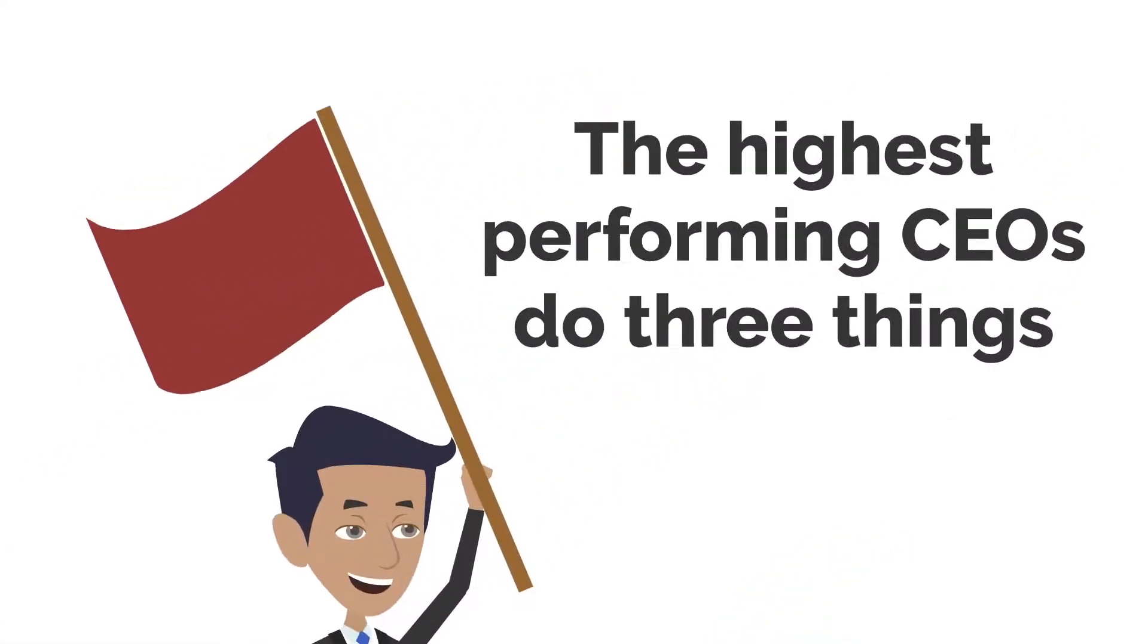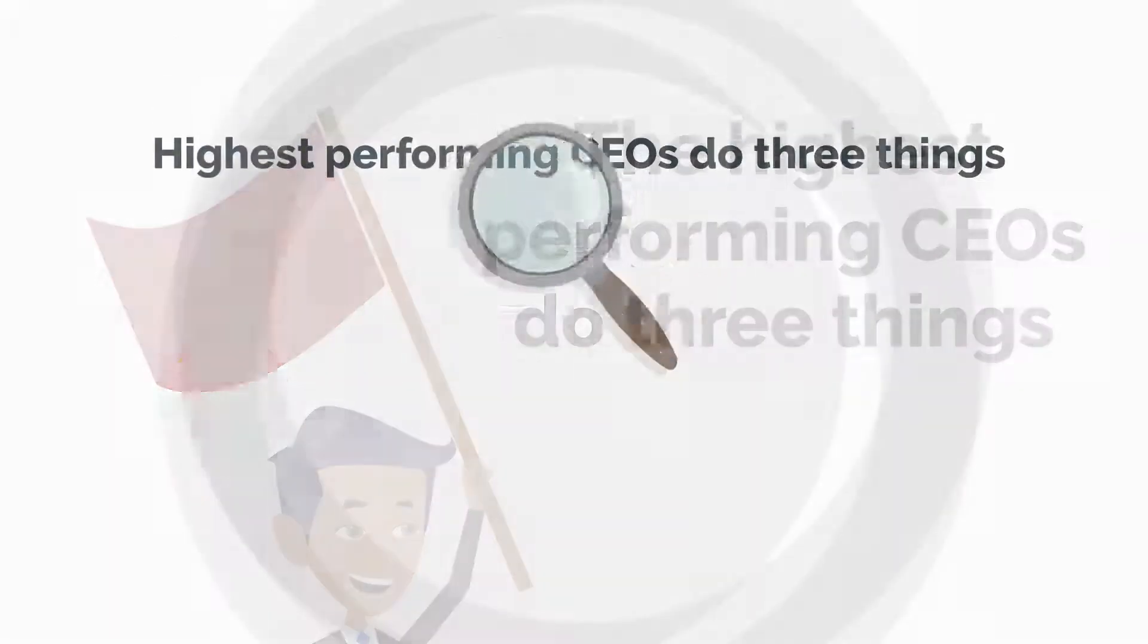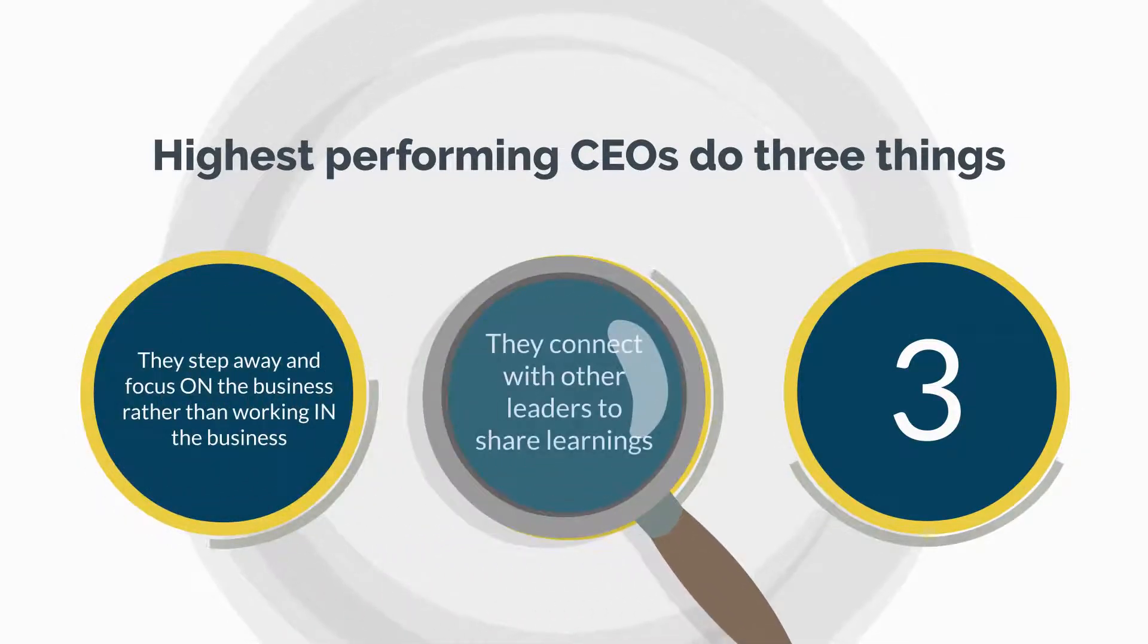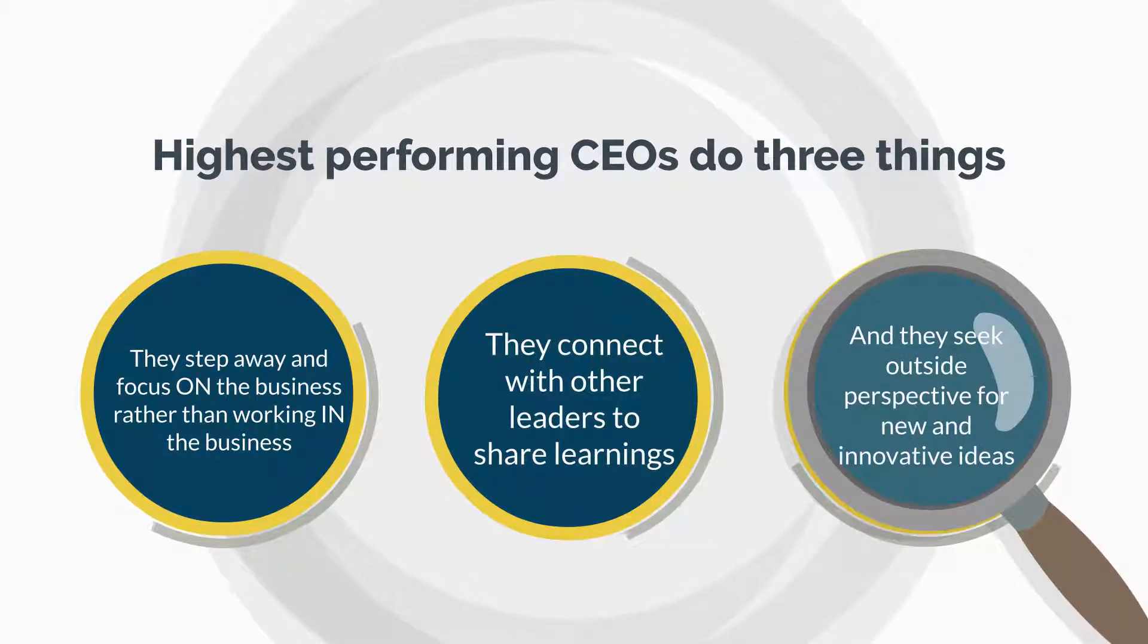The highest performing CEOs do three things. They step away and focus on the business rather than working in the business. They connect with other leaders to share learnings and they seek outside perspective for new and innovative ideas.